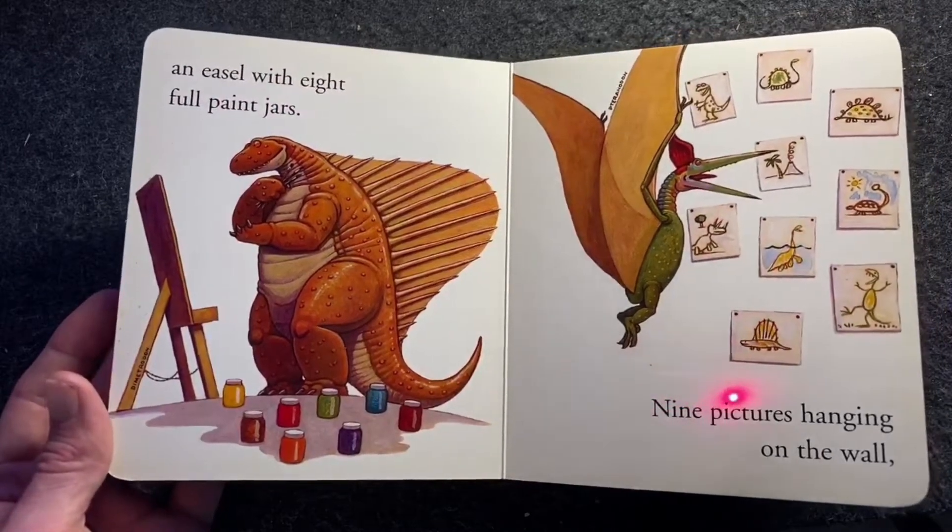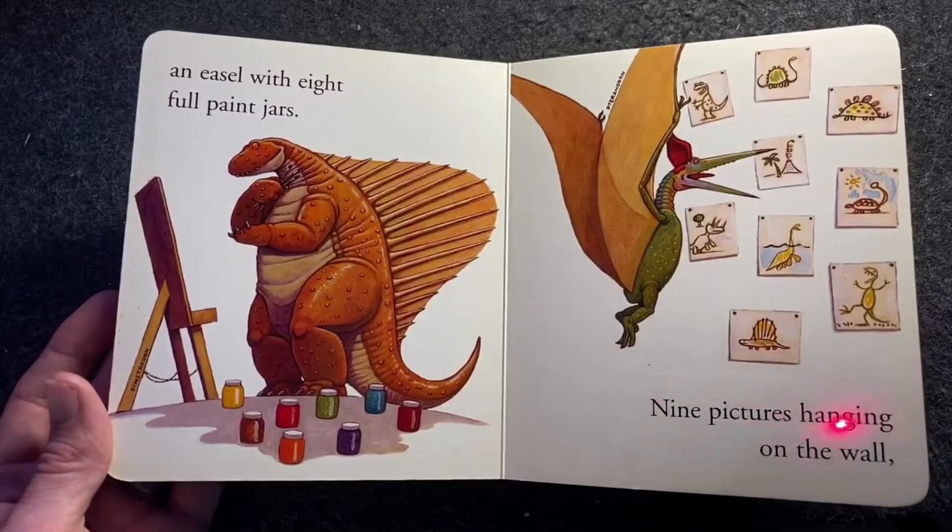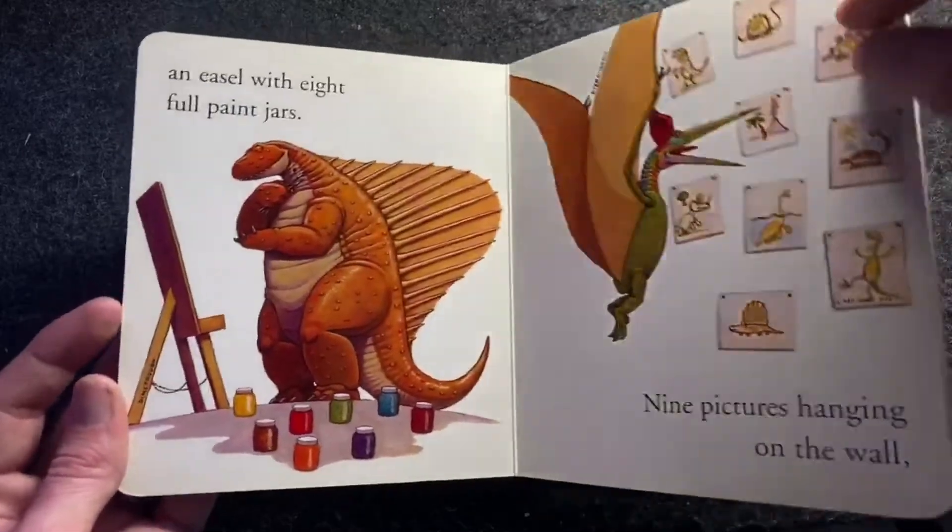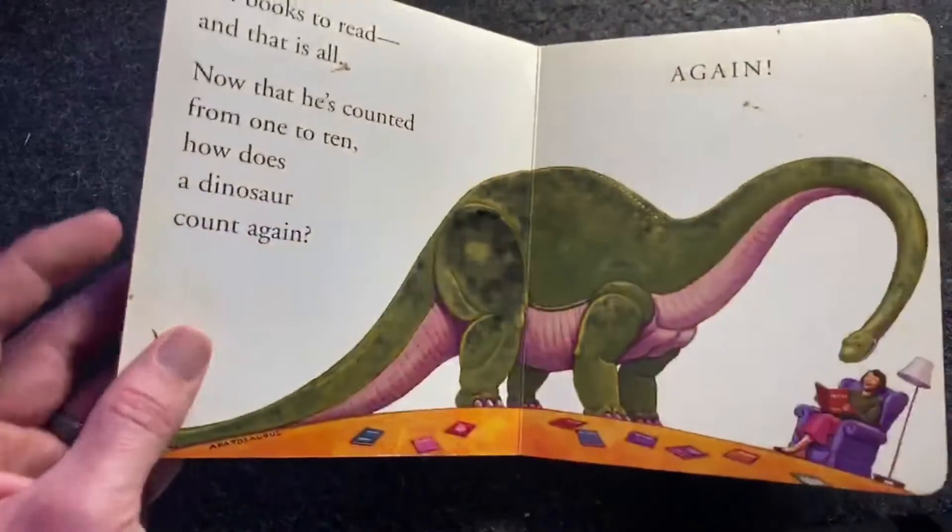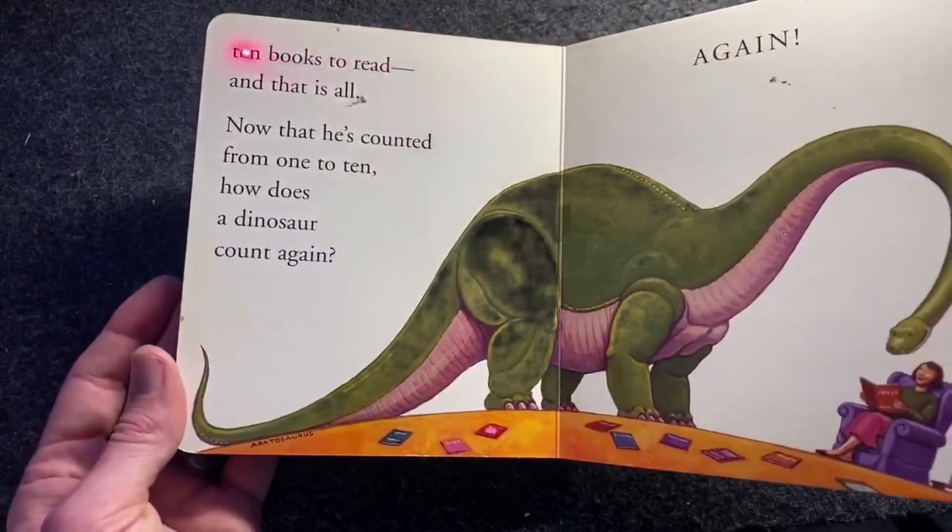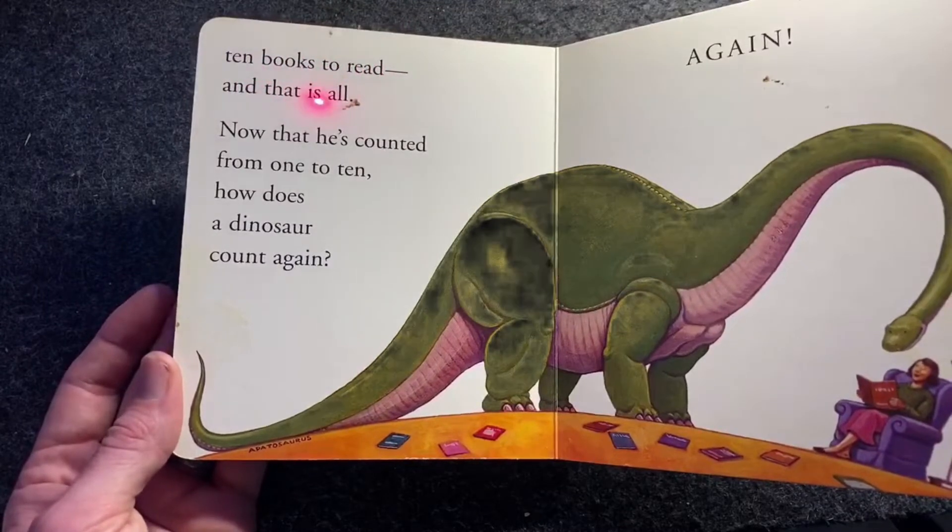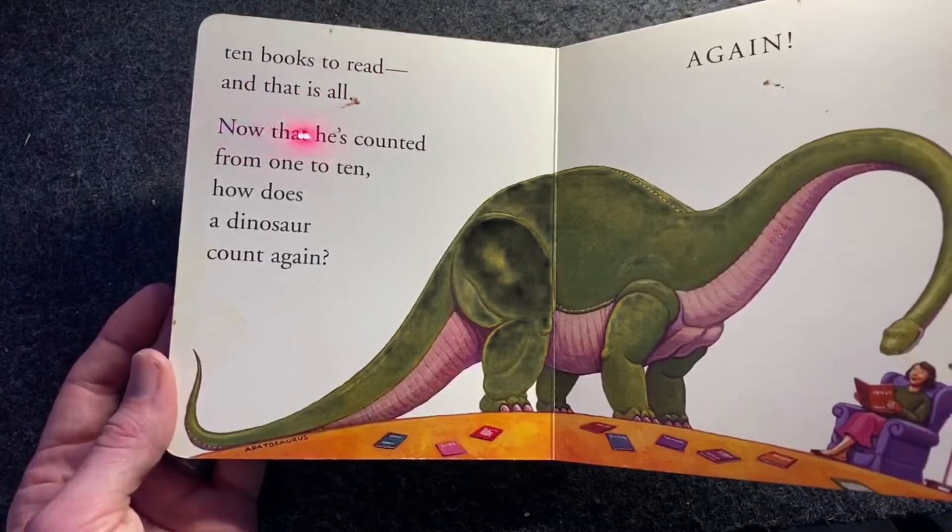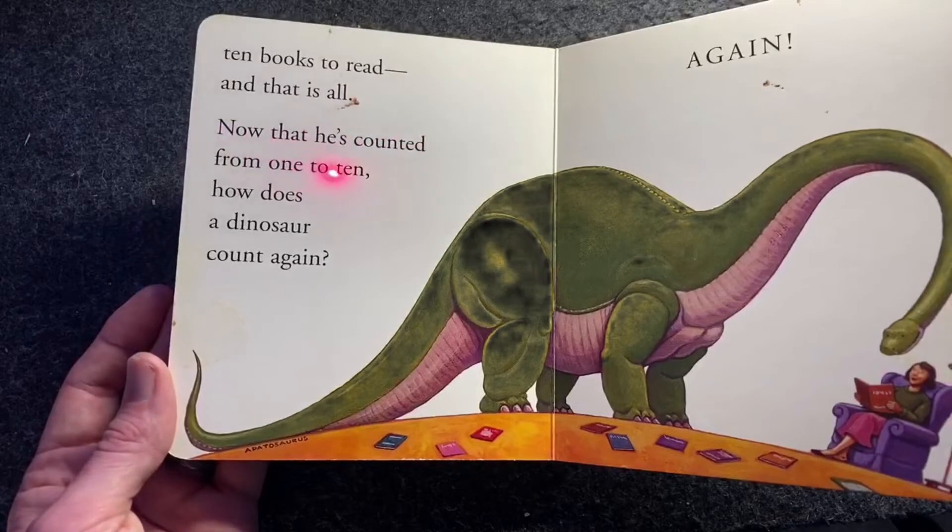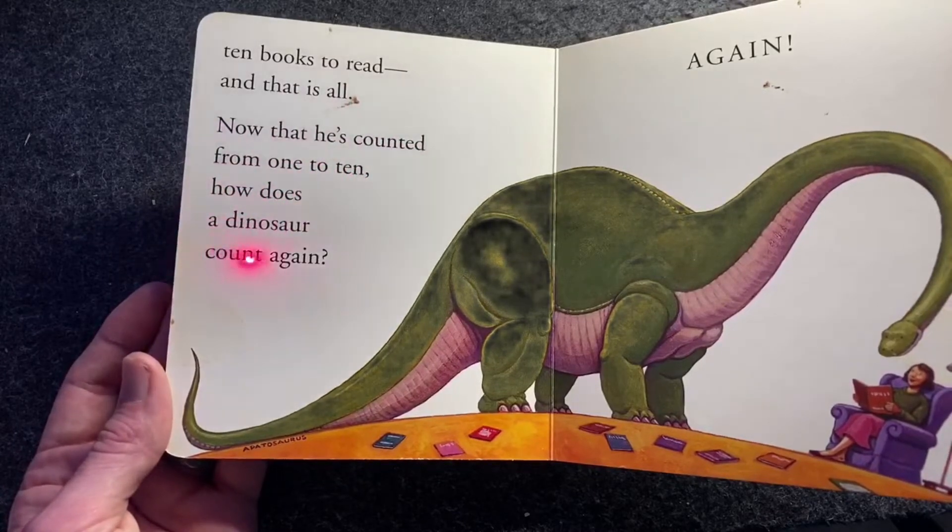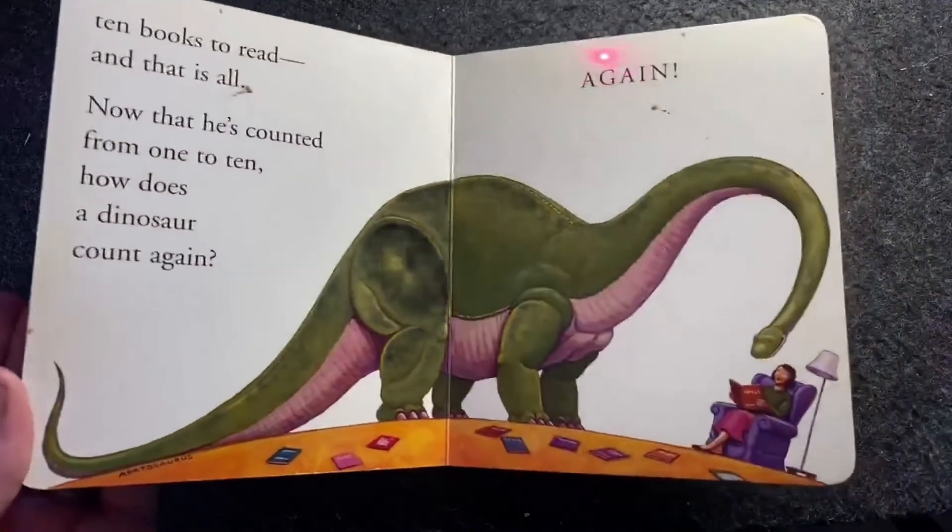Nine pictures hanging on the wall. Ten books to read. And that is all. Now that he's counted from one to ten, how does a dinosaur count again? Again.